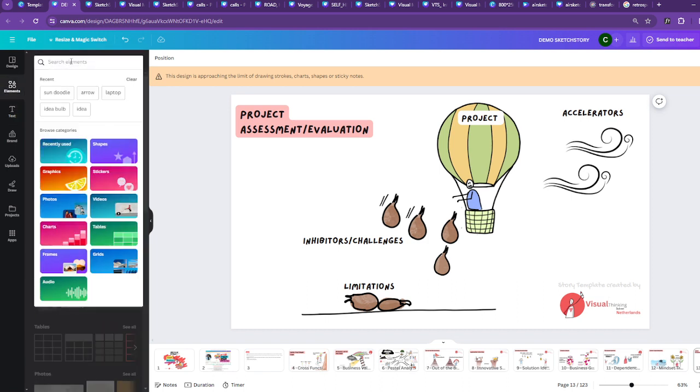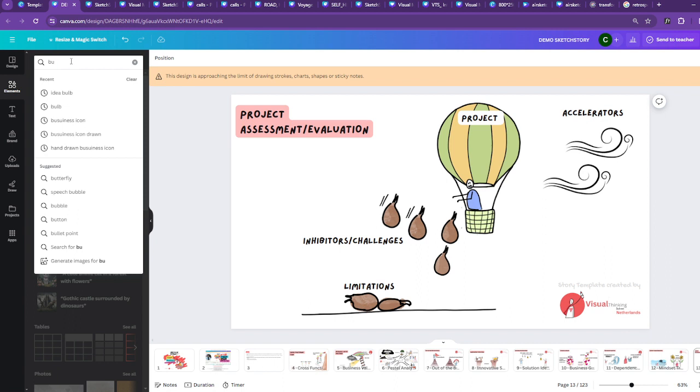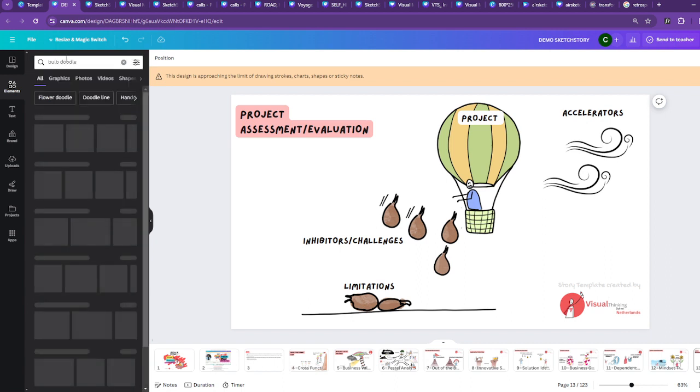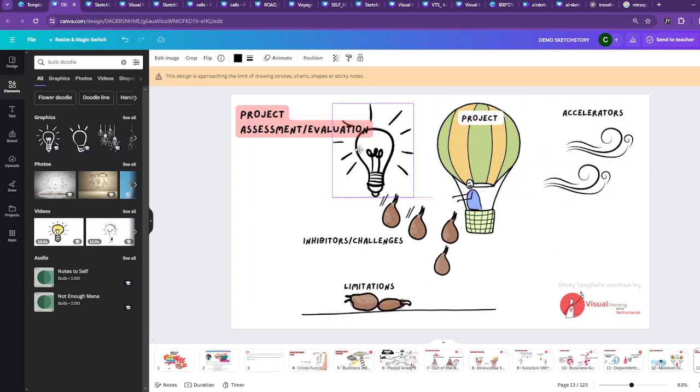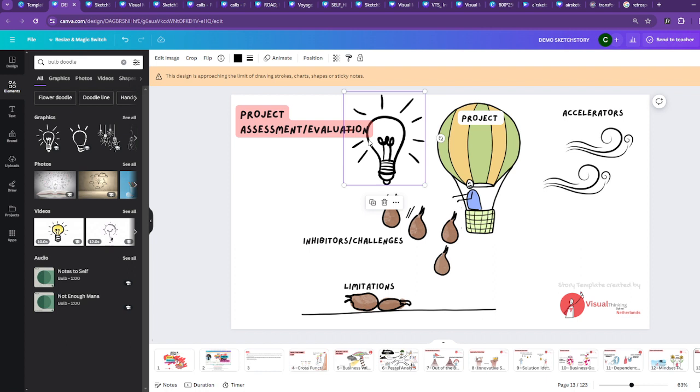This is the guy. You can easily include a bulb as well. These are all made on Canva by the way. You can just search bulb doodle and then add a bulb here as well. This becomes your what can be done better.